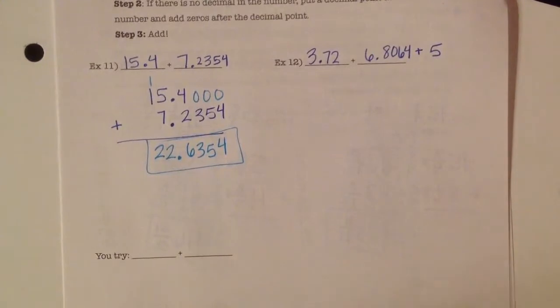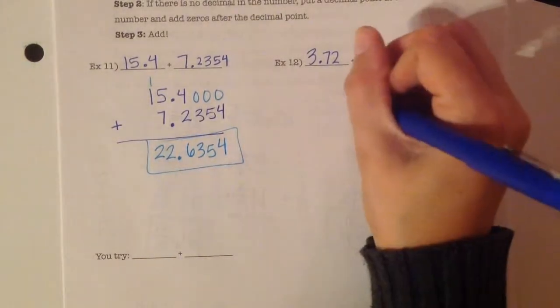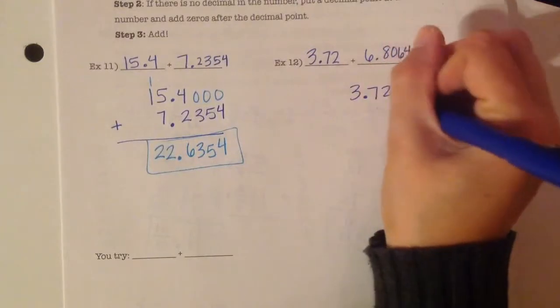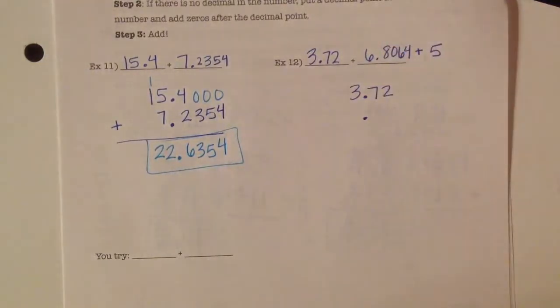So, we've got three numbers here that we need to line up. Again, order does not matter. I'm going to start with the first one given. We've got 3.72. For my next number, my decimal has to line up.